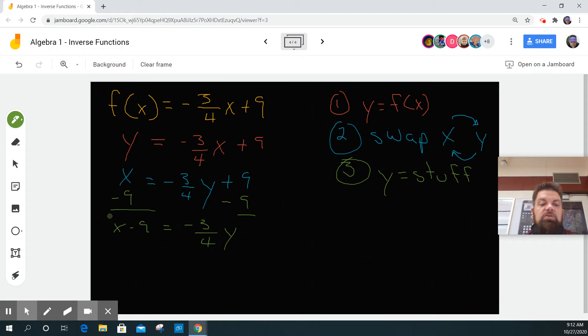And then I'm going to multiply this by negative four over three. On this side, it stays as negative four over three times the quantity x minus 9 is equal to—remember that the four cancels with the four, the three cancels with the three, the negative cancels with the negative—and over here, I got a positive y.